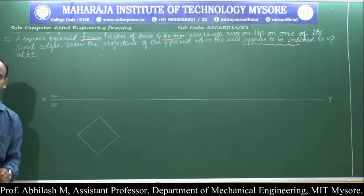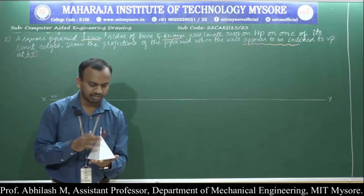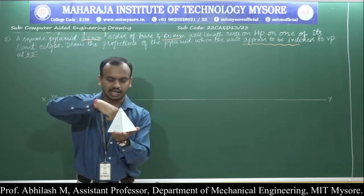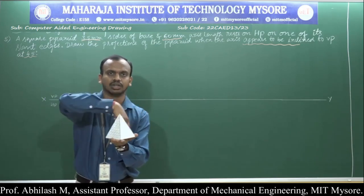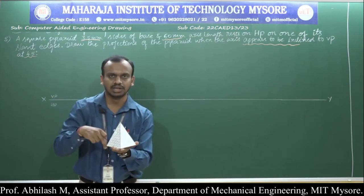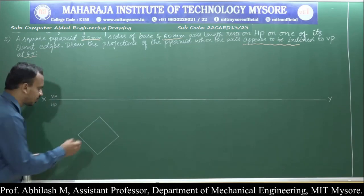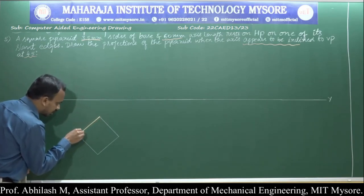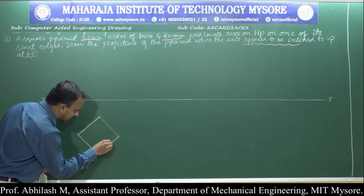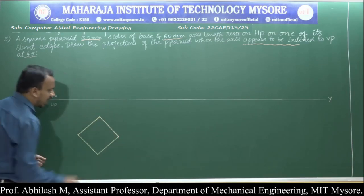This is the first thing we are supposed to do — rest a square pyramid in the corner condition. Now identify the points that are clearly visible. When placed in the corner condition and viewed from the top, all the sides are clearly visible, so we make those edges thick lines. The complete base is visible, so make those thick lines.